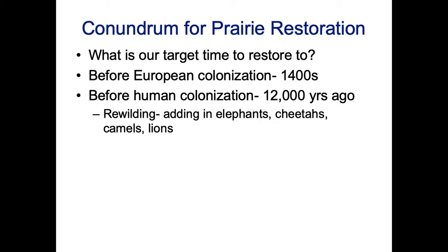There have been some discussions about rewilding our prairies because there is evidence that the presence of people led to the decline of some large megafauna species. Some people have argued that we should be adding these megafauna back. We used to have things like mastodons — and elephants are the closest relative to mastodons. There was an American cheetah, American camels, and lions. These didn't go extinct from climate change; it's from people. So should that be part of our restoration conversation?